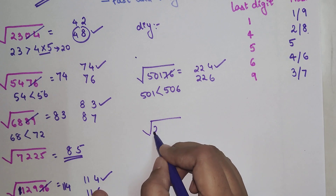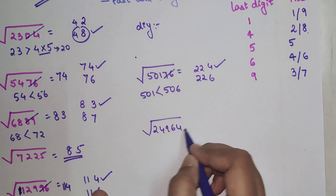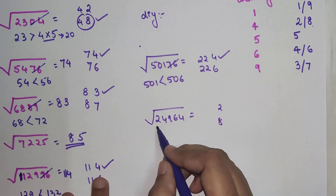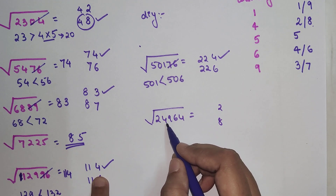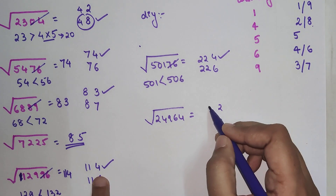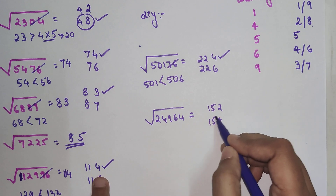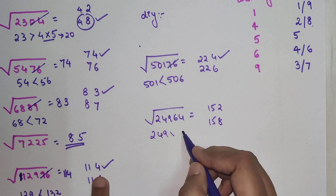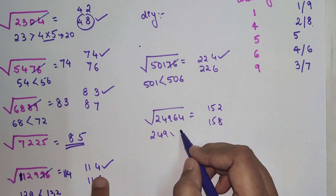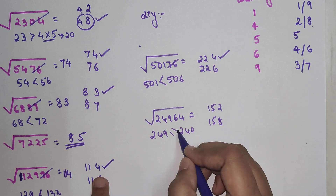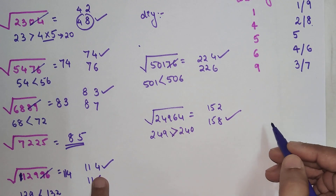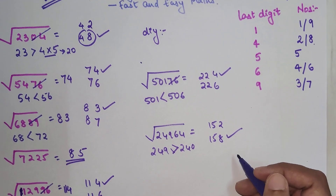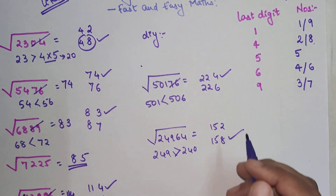One more: the square root of 24964. The last digit is 4, so possible unit digits are 2 or 8. Striking out the last two digits gives 249, which is close to 225, which is 15². Multiply 15×16=240. Since 249 is greater than 240, we take the greater value, so the answer is 158.